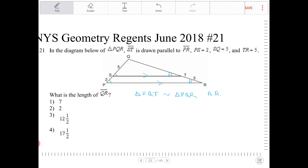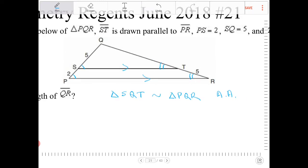All right, so PS is equal to 2, SQ is 5, and TR is equal to 5. What is the length of QR? So having this understanding, now the question is asking us to solve for QR.